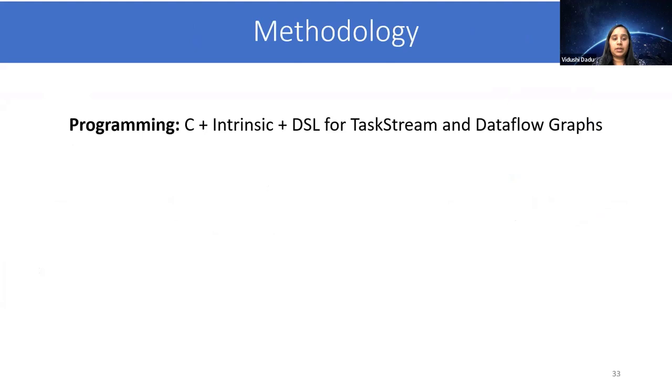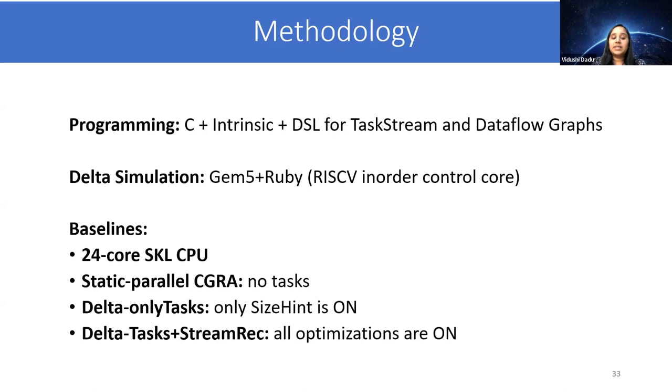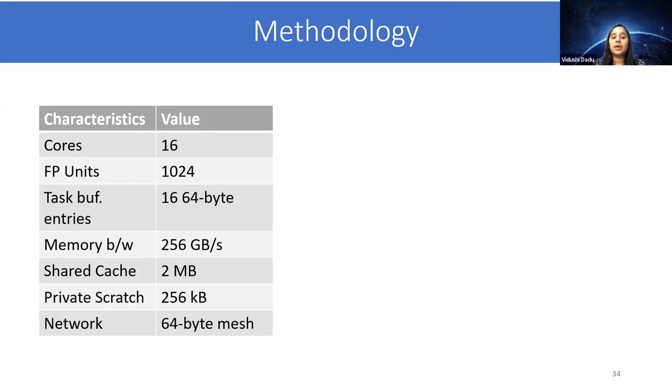Let's move to evaluation. We program Delta hardware using C++ intrinsics and use GSL for TaskStream and data flow graphs. We simulate using GEM5 and Ruby. Our baselines are a 24-core SKL CPU, a static parallel CGRA which has no tasks and all work scheduled by the control core, and then we study two configurations of our proposed hardware. One is only tasks where only the creation and size optimization is on. The second is Delta with tasks and stream recovery, where all the optimizations are on. Here are the system configurations where we use 16 cores and 256 gigabytes per second memory bandwidth. We study five workloads using synthetic data sets with varying size and densities.